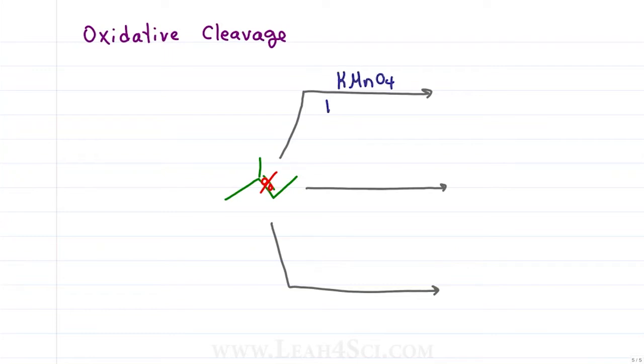KMnO4 in a hot concentrated solution will give us maximum oxidation, where the secondary carbon gives us a ketone but the primary carbon gives us a carboxylic acid.